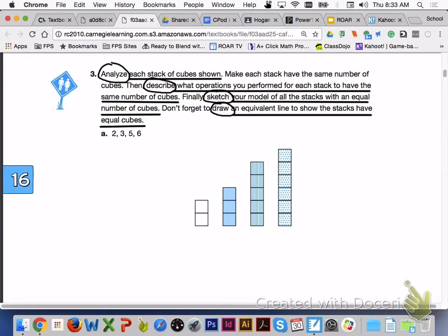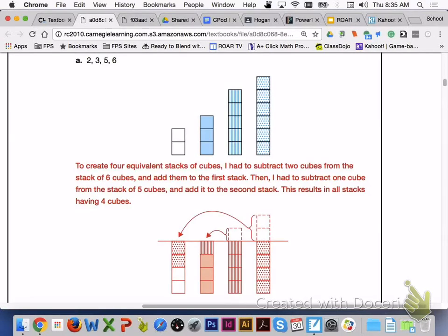Please turn to page 1072, answer number three, letter A, and letter B with your group members. For number three, letter A, to create four equivalent stacks of cubes, you have to subtract two cubes from the stack of six cubes and add them to the first stack. Then, you have to subtract one cube from the stack of five cubes and add it to the second stack. This will result in all stacks having four cubes.